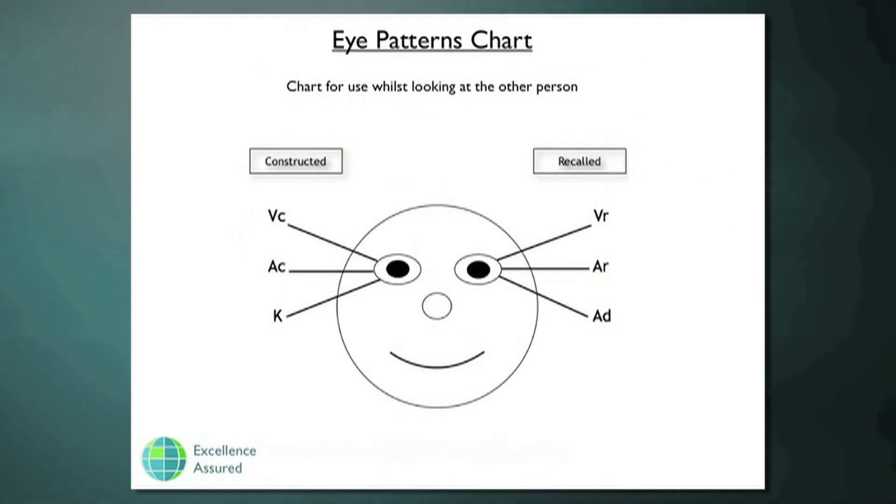The eye patterns on the page are those of a normally organized person. And this doesn't mean that another person's eye patterns are unorganized, just that they're reversed. I think that roughly 90 to 95% of the people in the world are organized in this way. They're either organized in this way or they're reversed.